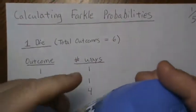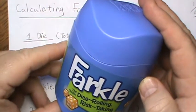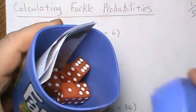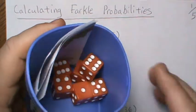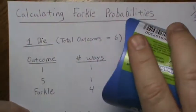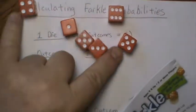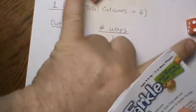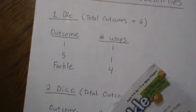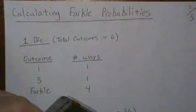Hello. In today's video we're going to calculate probabilities from a game that I just discovered about two or three weeks ago. It's called Farkle. It's played with six dice. You roll, you set some aside, you roll again if needed.